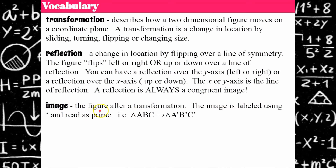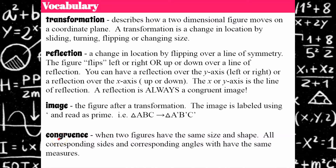An image is what we call the figure after the transformation, and we label it using the apostrophe sign, read as 'prime.' For example, triangle ABC is transformed to triangle A prime, B prime, C prime — those three vertices are the reflected or transformed image. Congruence means two figures have the same size and shape: all corresponding sides and all corresponding angles will have the same measure.